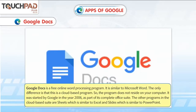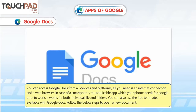Google Docs is a free online word processing program, similar to Microsoft Word. The only difference is that it is a cloud-based program, so the program does not reside on your computer. It was started by Google in the year 2006 as part of its complete office suite. The other programs in the cloud-based suite are Sheets, which is similar to Excel, and Slides, which is similar to PowerPoint. You can access Google Docs from all devices and platforms. All you need is an internet connection and a web browser.